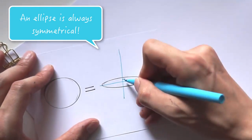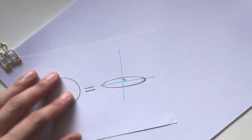You can try this by taking a cup in front of you at different angles, and you will always get a perfect ellipse.